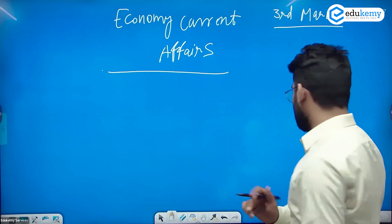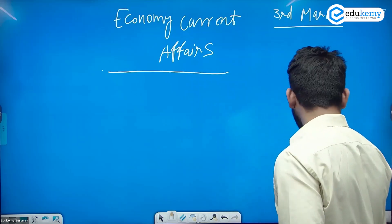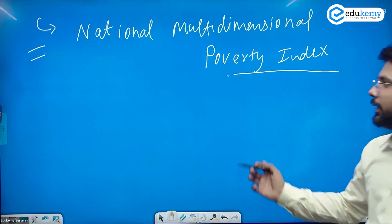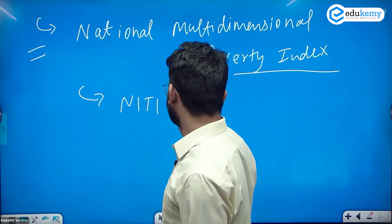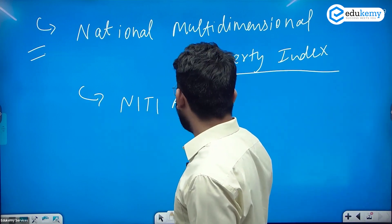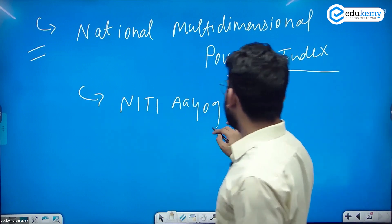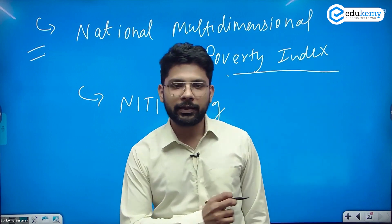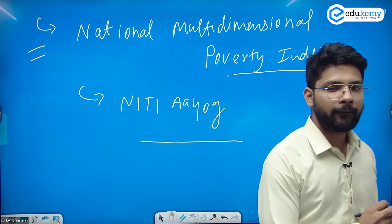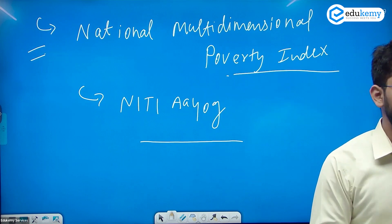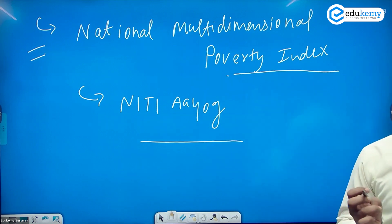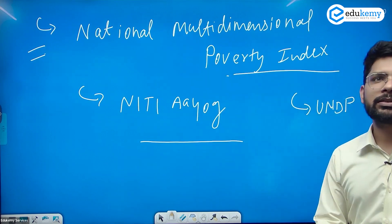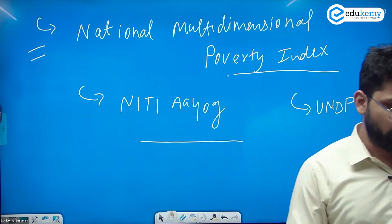The National Multi-Dimensional Poverty Index is released by NITI Aayog. At the international level, the Multi-Dimensional Poverty Index is released by UNDP.